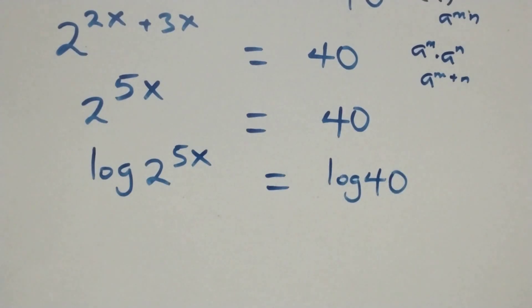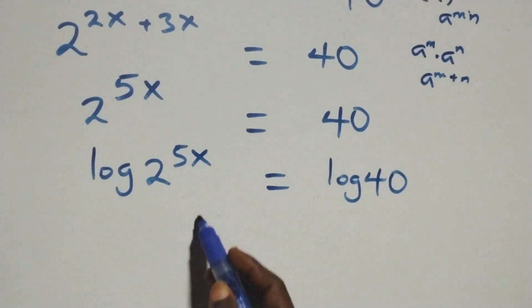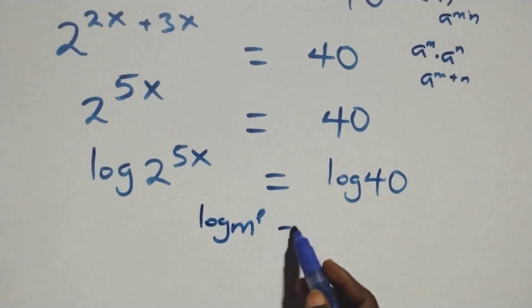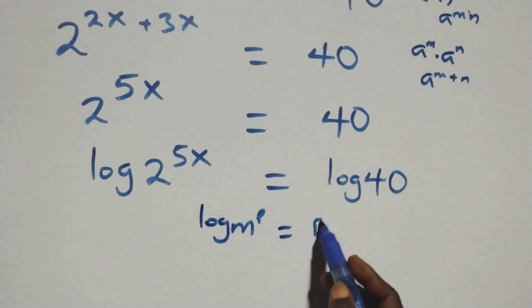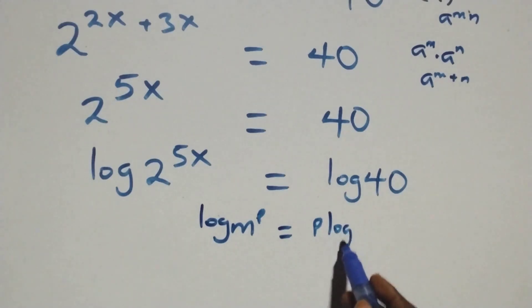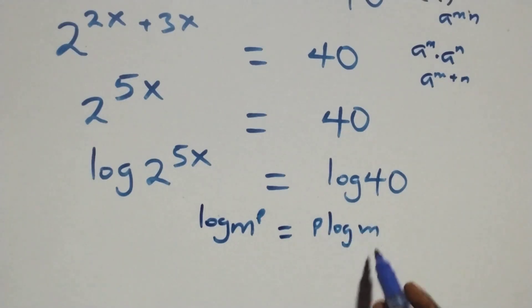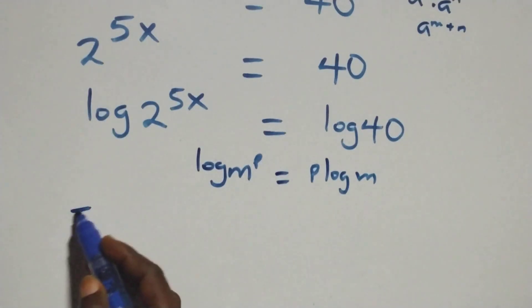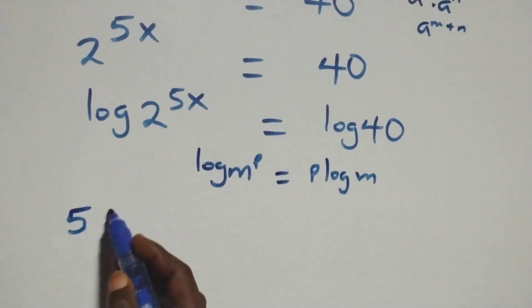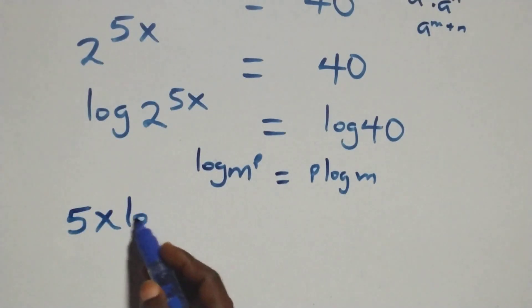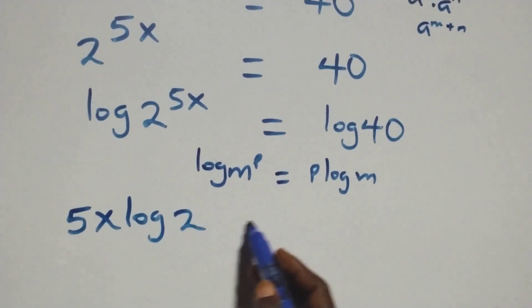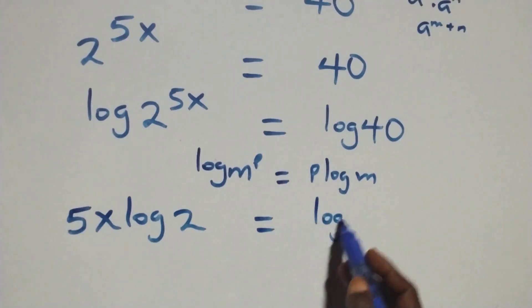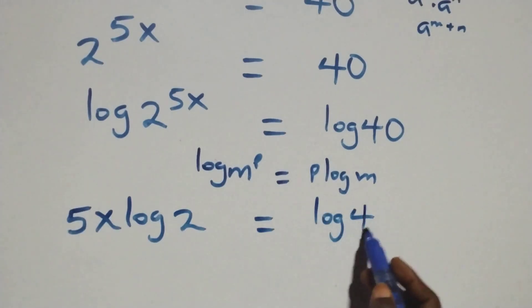Here we apply the power rule of logarithm: when we have log m raised to power p, this is the same thing as p·log m. So the power is 5x, and we have 5x·log 2 equals log 40 on this side.